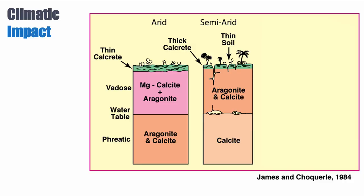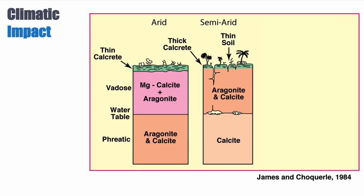If we go into a semi-arid climate, we have more water. In the phreatic zone, which is saturated with water, we are left with only calcite — we lose aragonite, we lose magnesium calcite. We also have the formation of caves, tubes, and dissolution that starts in this type of setting, so more evidence of dissolution at the water table. In the vadose zone, we preserve aragonite and calcite, and this calcite comes from the high-Mg calcite re-crystallizing into low-Mg calcite because we have too much water to really preserve it.